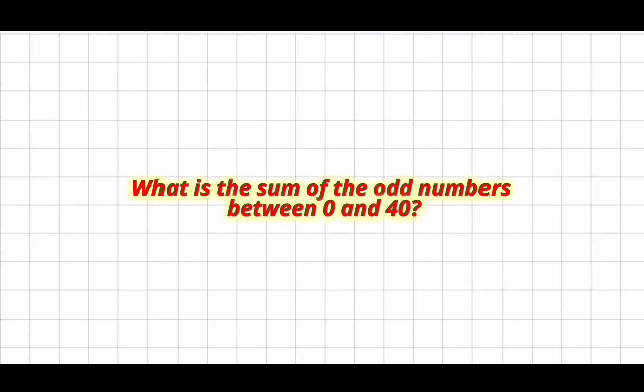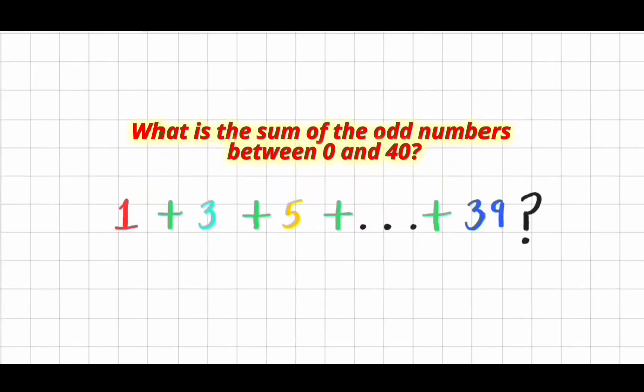Now let's take this reasoning and visualization one step further with the question. What is the sum of the odd numbers between 0 and 40? You could just add the numbers up one by one, but there is a pictorial trick you can use to solve this in seconds.